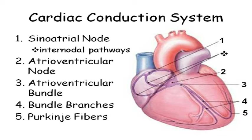The cardiac conduction system — how the electrical signal, the action potential, gets spread throughout the heart — basically has five parts. The cells we're talking about here are the auto-rhythmic cells; they're the 1%.